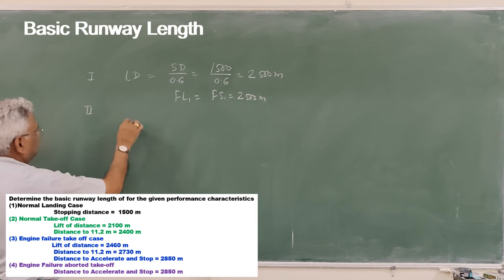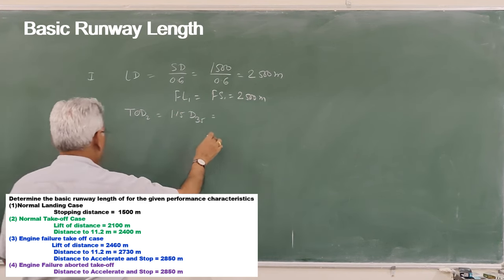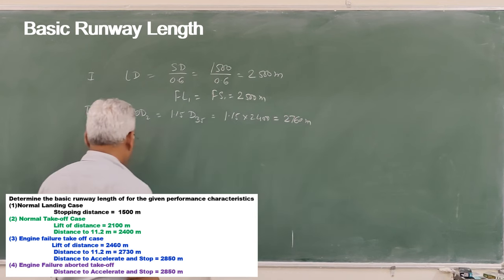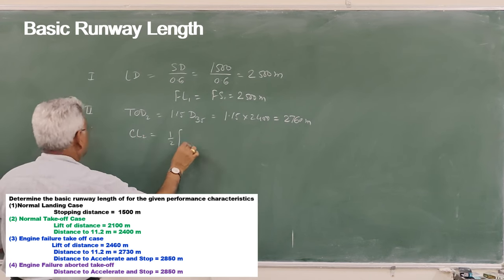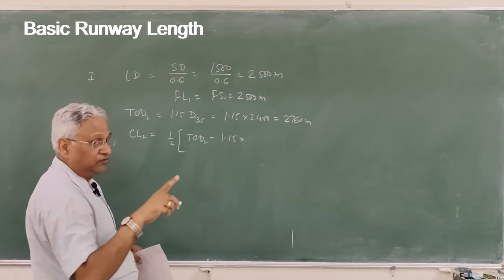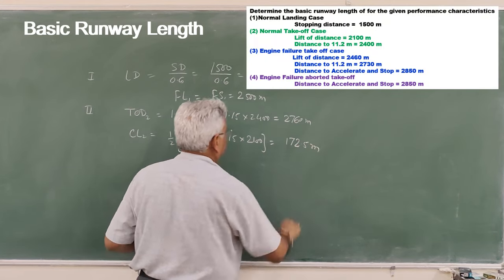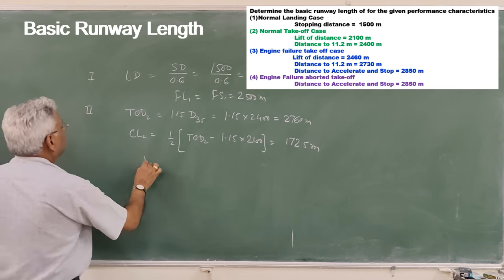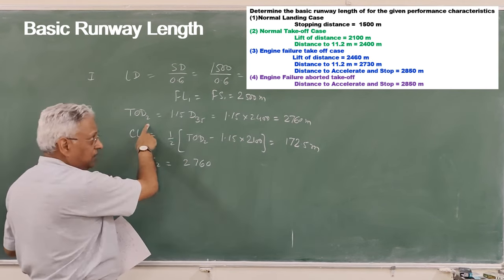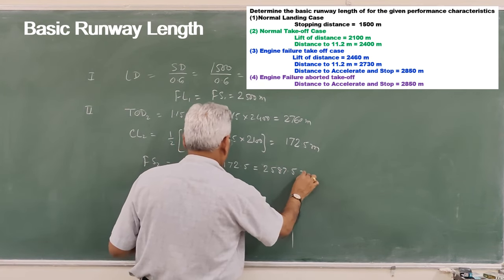Case 2 — normal takeoff: lift-off distance is 2100 meters and distance to 11-meter height (D35) is 2400 meters. TOD for case 2 is 115% of D35, which is 115% of 2400 equals 2760 meters. Clearway CL2 is half of (TOD minus 115% of LOD) — that is half of (2760 minus 115% of 2100) — which equals 172.5 meters. Therefore full-strength pavement Fs2 equals 2760 minus 172.5 equals 2587.5 meters.